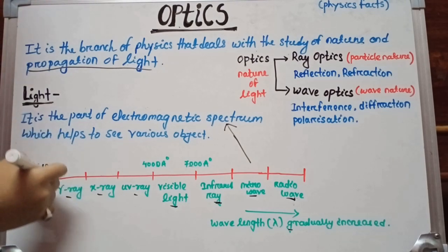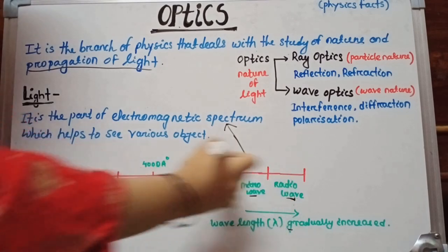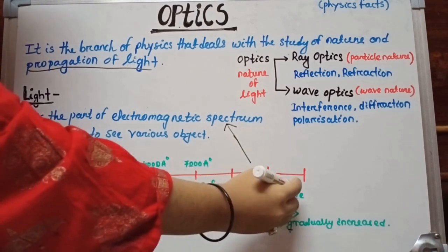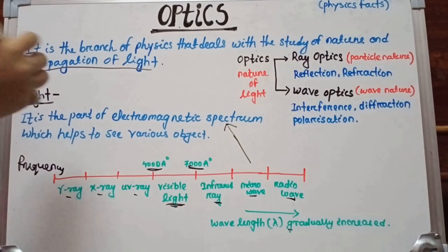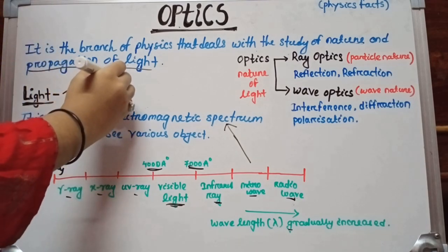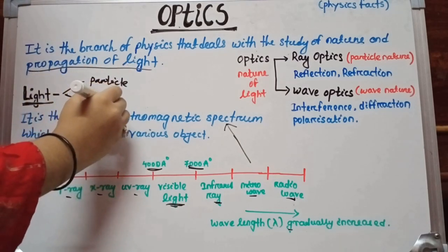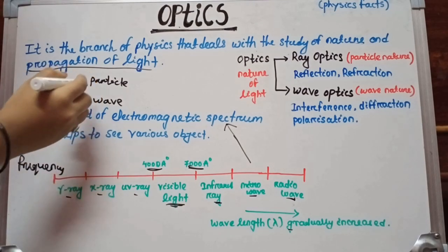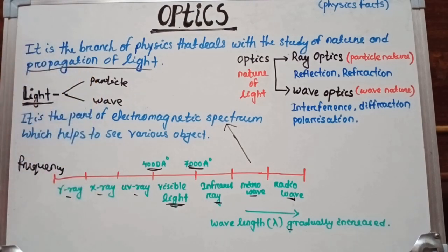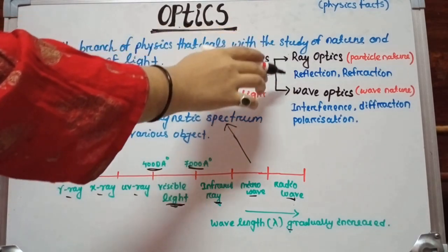From gamma ray to radio wave, the wavelength gradually increases. Visible light has a wavelength in the range of 4000 Angstroms to 7000 Angstroms. Light has two natures: one is particle nature and another one is wave nature.